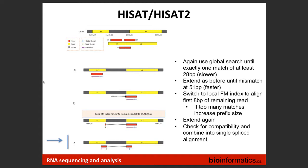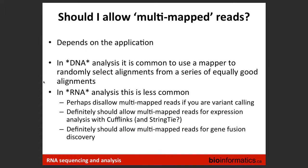HISAT2 builds a dictionary of all potential splice junctions. It also takes splice junctions you provide — if you have good annotation with known splice junctions — and uses that as a guide, comparing what it found with what you provided. After alignment, some reads may map to multiple locations with equal quality; those are called multi-mapped reads.